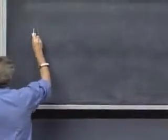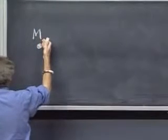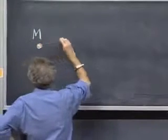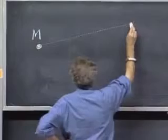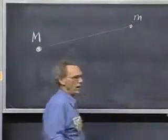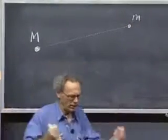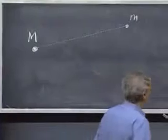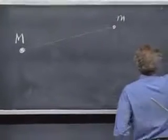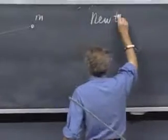If this is an object, capital M, and you can think of this as being the earth if you want to, and there is here an object, little m, then I have to know what the forces are between the two. And this now is Newton's universal law of gravity, which he postulated.